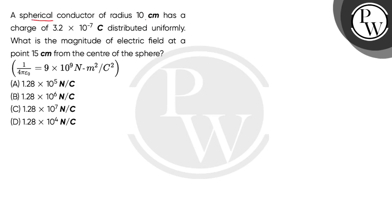A spherical conductor of radius 10 cm has a charge of 3.2 multiplied 10 to the power minus 7 coulomb distributed uniformly. What is the magnitude of electric field at a point 15 cm from the center of the sphere? 1 by 4 pi epsilon naught is equal to 9 multiplied 10 to the power 9 newton meter square per coulomb square.